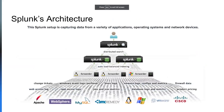Next, I'll briefly go over Splunk's architecture and how we are able to get data into the platform. We can break this down into three main components that make up this pyramid-like structure: forwarders, indexers, and a search head. At the bottom, we can see a wide variety of common sources that Splunk collects data from. We are not limited to these — our platform can take in any data source that is text-based and human-readable.